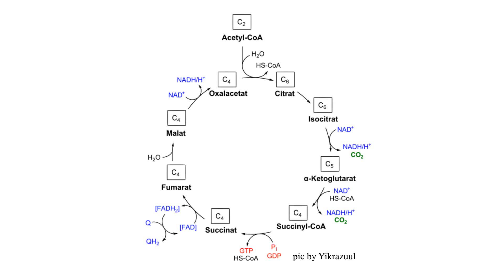Once a jolly pyruvate enters the matrix of a mitochondrion, so they say. A decarboxylating complex dehydrogenase converts it to acetyl-coenzyme. Waltz round the cycle, waltz round the cycle, waltz round the TCA cycle today.